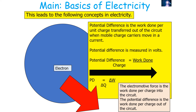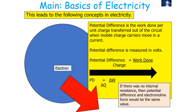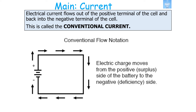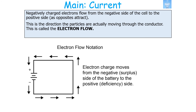The electromotive force is the work done per charge into the circuit, and the potential difference is the work done per charge out of the circuit. If there was no internal resistance, then the PD and EMF would be the same value. Electrical current flows out of the positive terminal of the cell and back into the negative terminal, which we call conventional current. But negatively charged electrons actually flow from the negative side of the cell to the positive side, because opposites attract and the same charges repel — this is the direction electrons actually move through the conductor, which we call the electron flow.